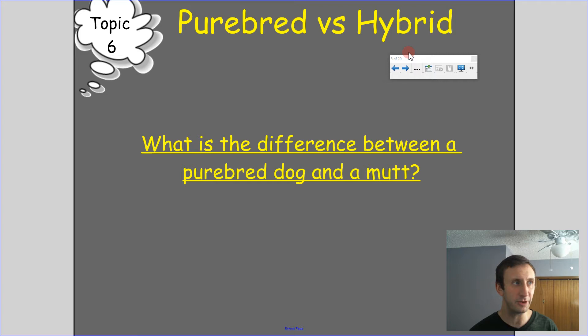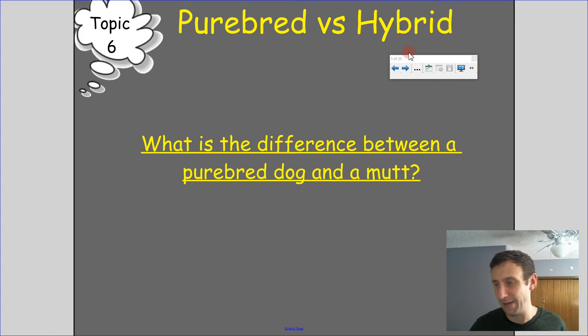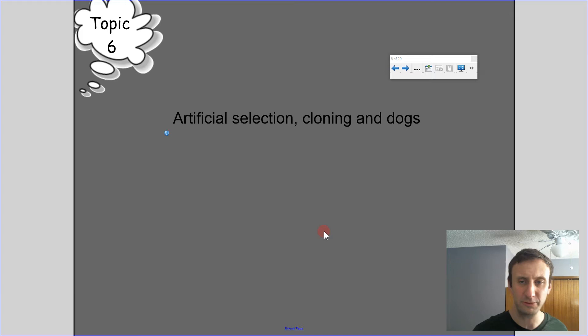You've probably heard that purebreds often have big problems. For example, Dalmatians often have kidney problems early in their lives. It's because that kidney problem has not been bred out — they keep breeding Dalmatians with Dalmatians to get more Dalmatians. They can't get rid of the disease because it's in the genetic code of the Dalmatians that end up breeding. So a mutt is typically a healthier animal.